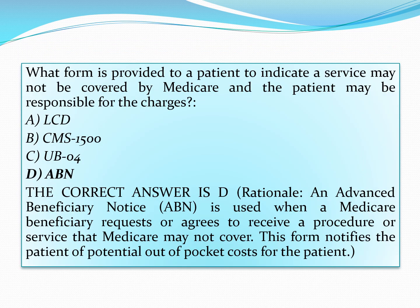Now let us see the second question. What form is provided to a patient to indicate a service may not be covered by Medicare and the patient may be responsible for charges? The options are LCD, CMS 1500, UB04, and ABN. The correct option is ABN — Advanced Beneficiary Notice.